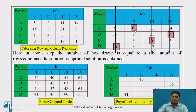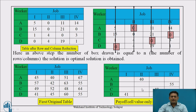Comparing the boxed zeros with the original table: the boxed zero for worker A corresponds to a value of 40 (job 2); for worker B, the value is 55 (job 4); for worker C, the value is 40 (job 3); and for worker D, 48 (job 1). Therefore, worker A should be assigned job 2, worker B job 4, worker C job 3, and worker D job 1.